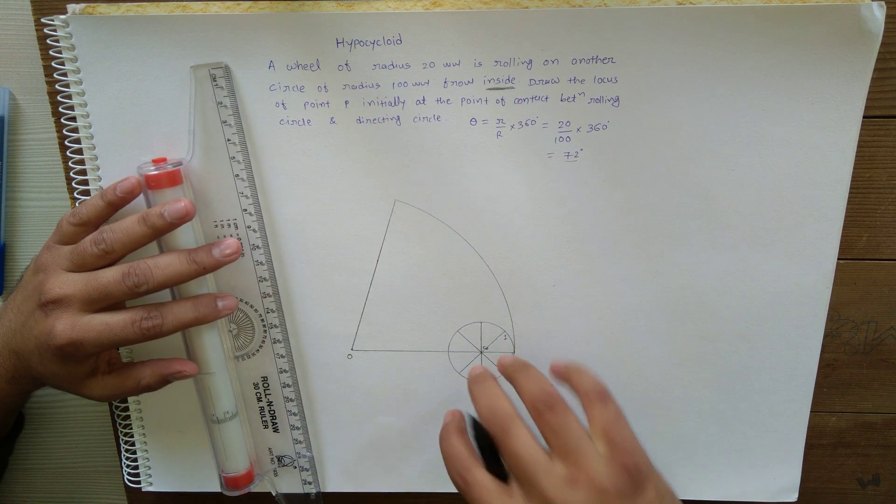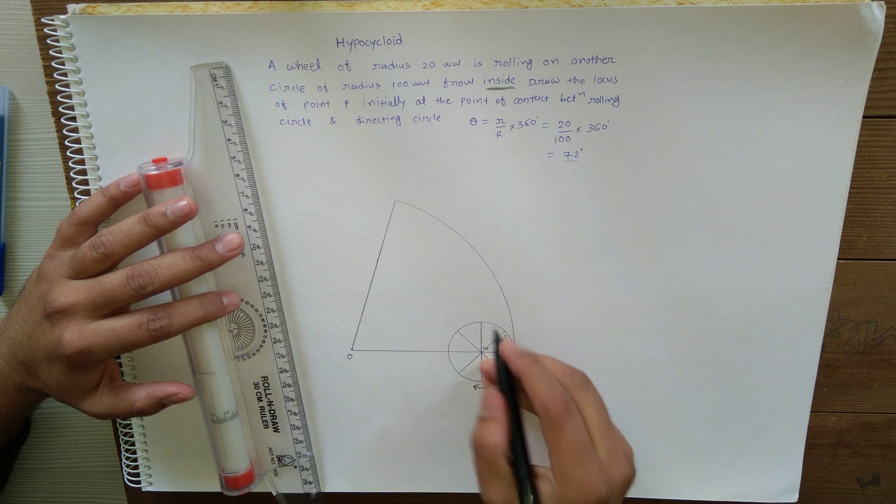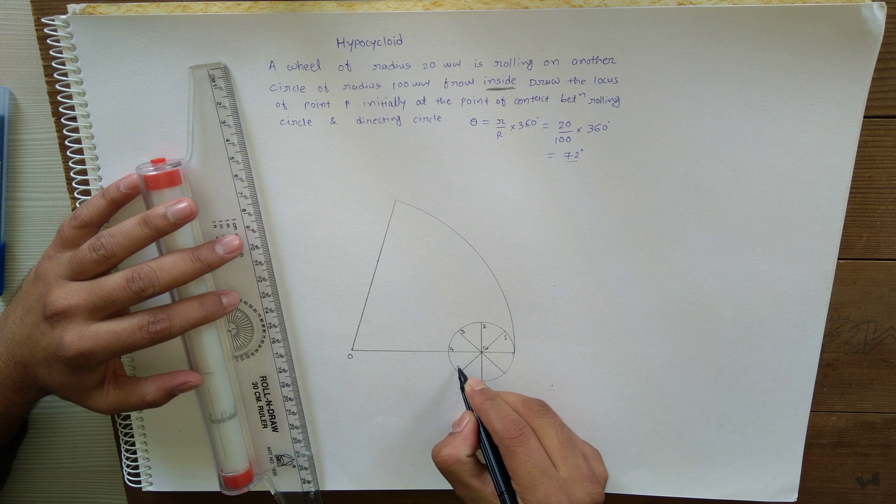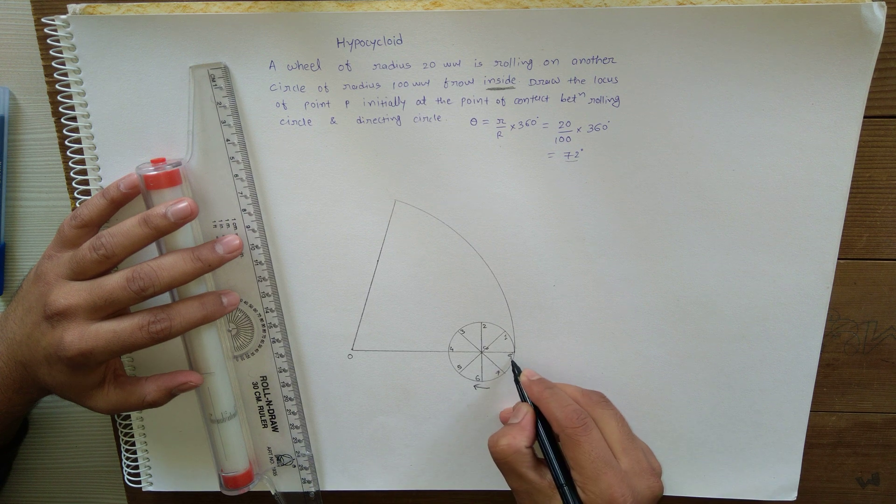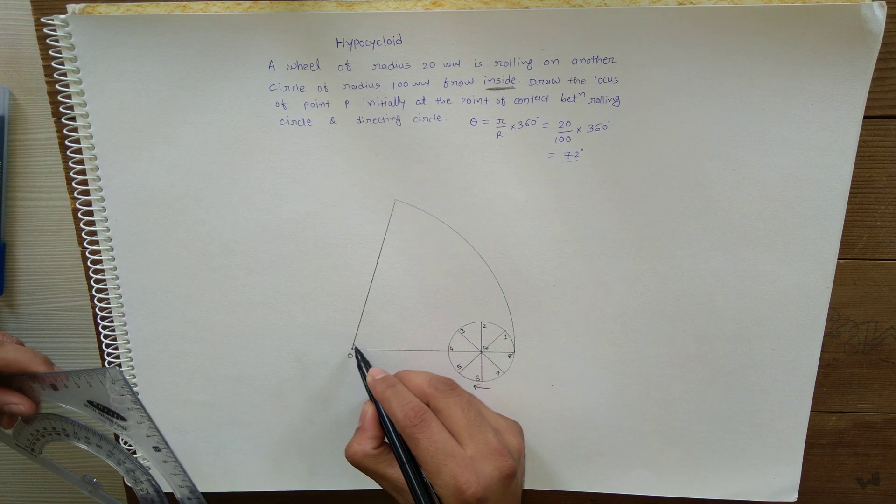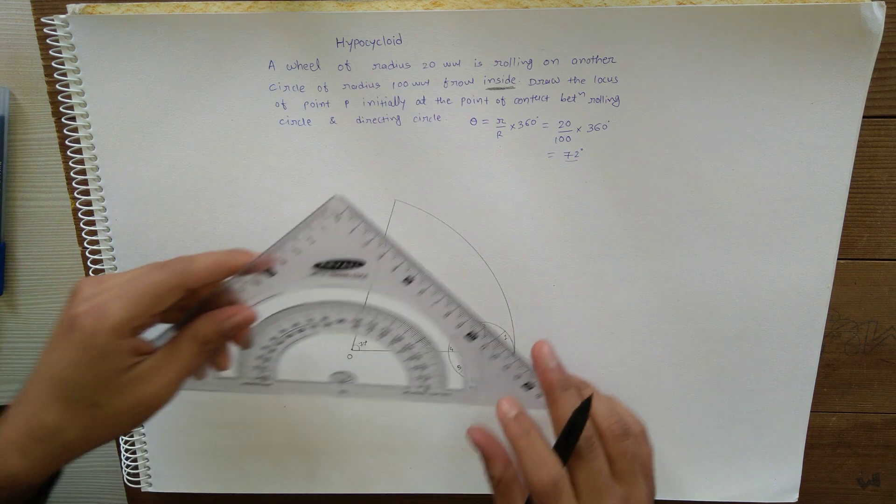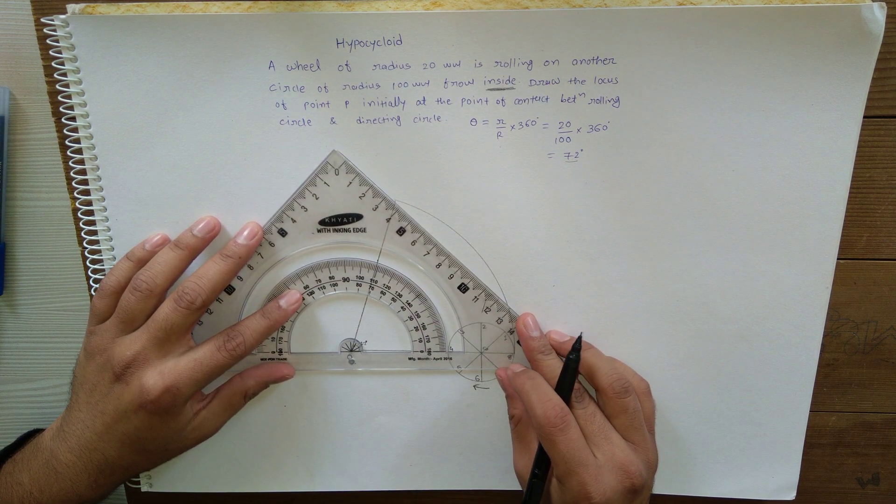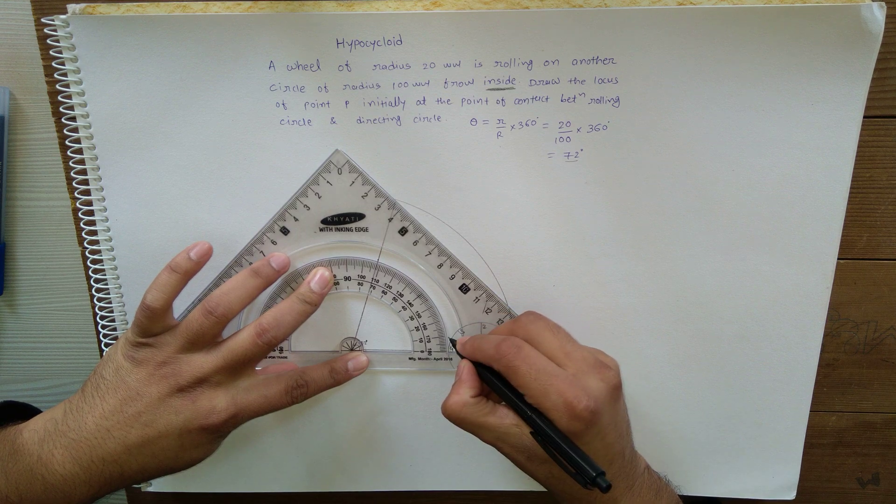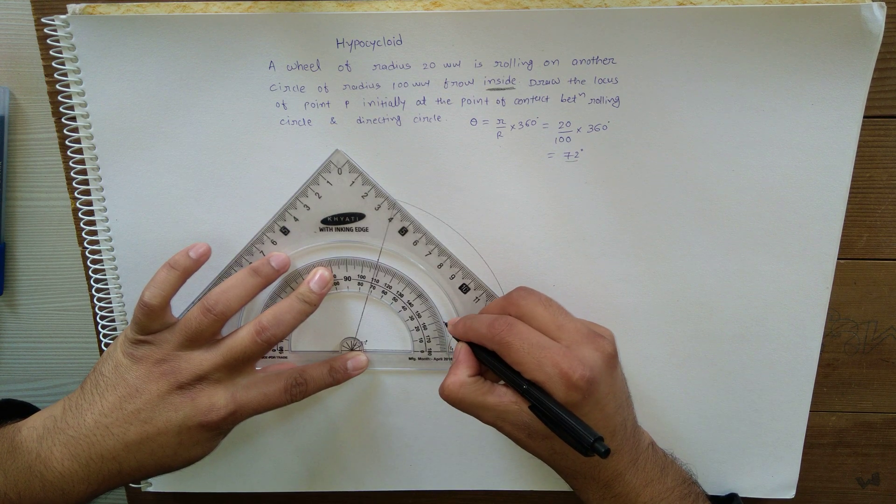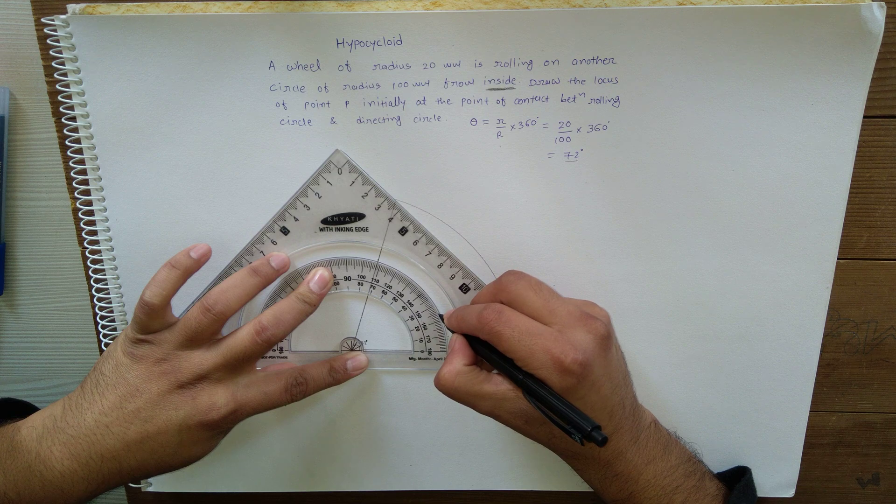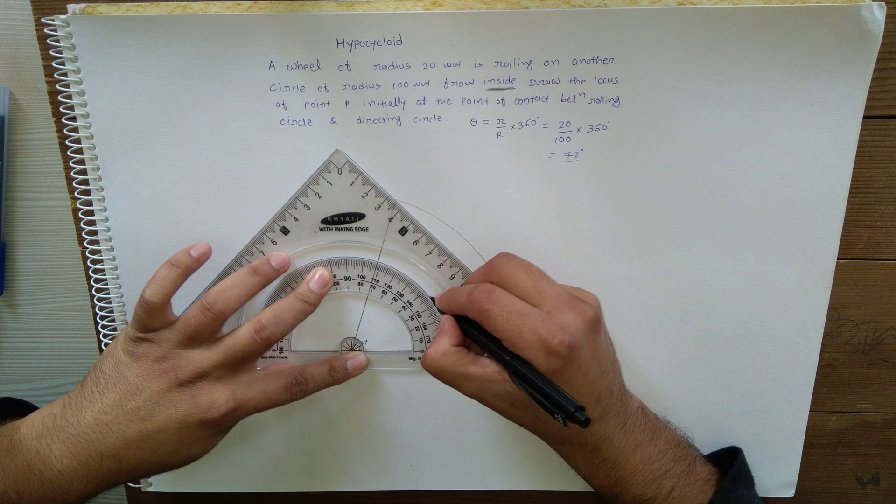This will be the first point of contact while this rolling circle is rolling in this direction, so I will give number one here, and number two, three, four, five, six, seven, and eight. Also divide this angle of 72 degrees into the same number of equal parts, that is eight. So 72 divided by eight is 9 degrees.